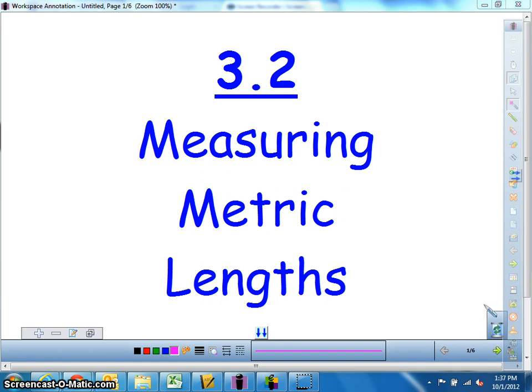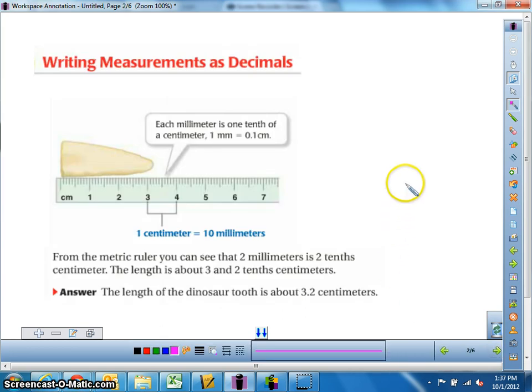So let's go ahead and get started. If we look at this example, it's showing us a dinosaur tooth. They've paired it up with a centimeter ruler, which you can see right below it. And on this centimeter unit, it's telling us that each millimeter is 1 tenth of a centimeter. So, 1 millimeter equals 0.1 centimeters, which is going to be important information for us in this unit.